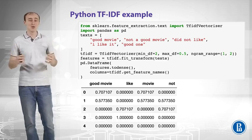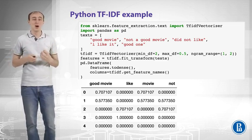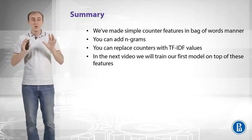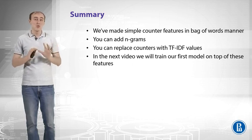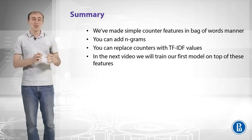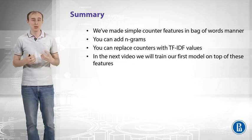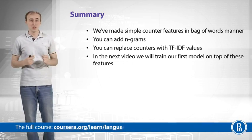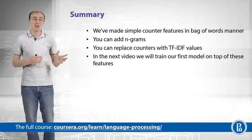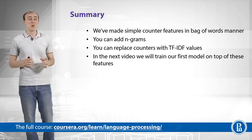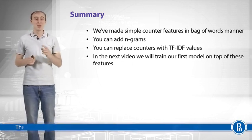Let's summarize. We've made simple counter features in a bag-of-words manner, replacing each text with a huge vector of counters. You can add n-grams to preserve some local ordering, which further improves the quality of text classification. You can replace counters with TF-IDF values, which usually gives a performance boost as well. In the next video we will train our first model on top of these features.